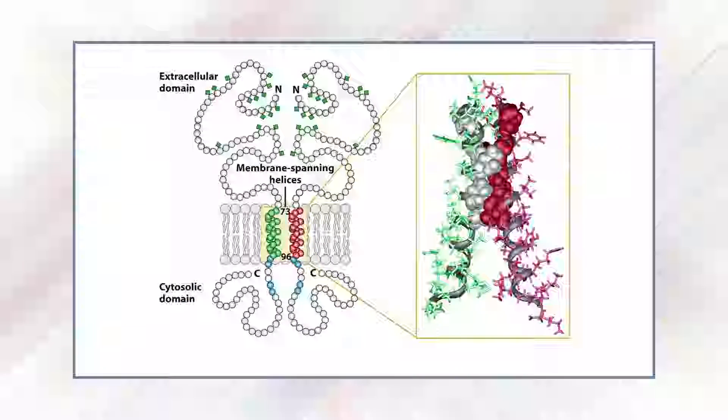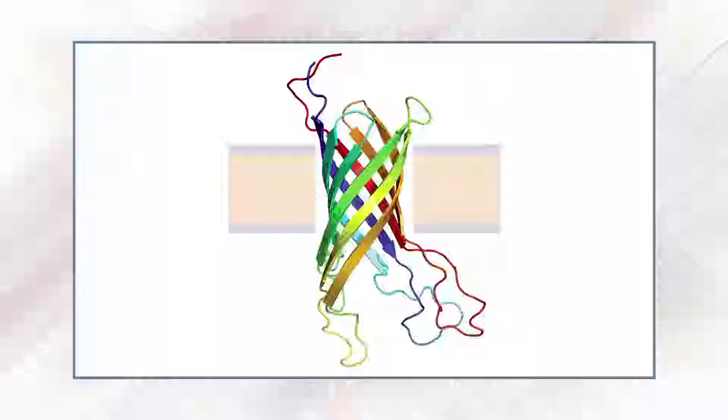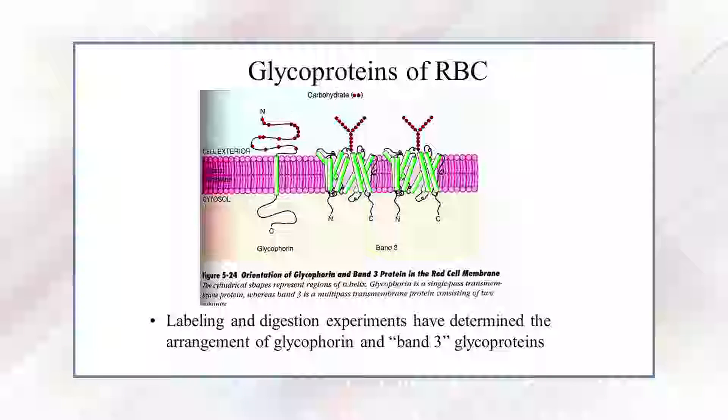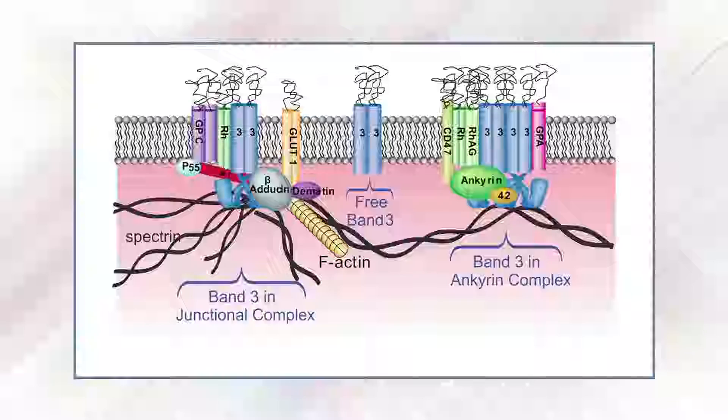Transmembrane proteins extend through the lipid bilayer as a single helix (e.g., glycophorin), multiple helices, or as barrels (e.g., porin). When the polypeptide crosses the membrane only once it is described as a single-pass transmembrane protein (e.g., glycophorin of human RBCs), and when it crosses several times it is called a multi-pass transmembrane protein (e.g., band 3 protein of human RBCs).